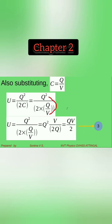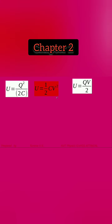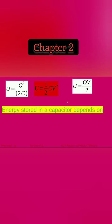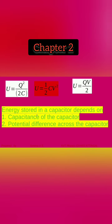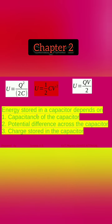There are three equations for energy stored in a capacitor. U is equal to q squared by 2C, U is equal to half CV squared, and U is equal to QV by 2. The energy stored depends on the capacitance, potential difference, and charge stored.